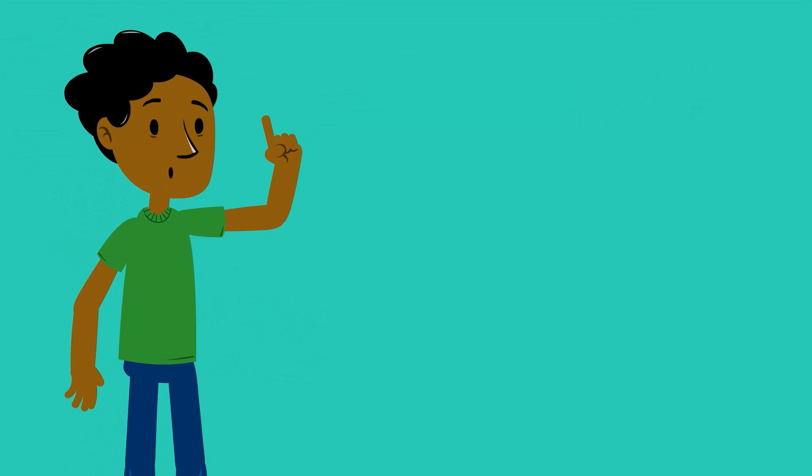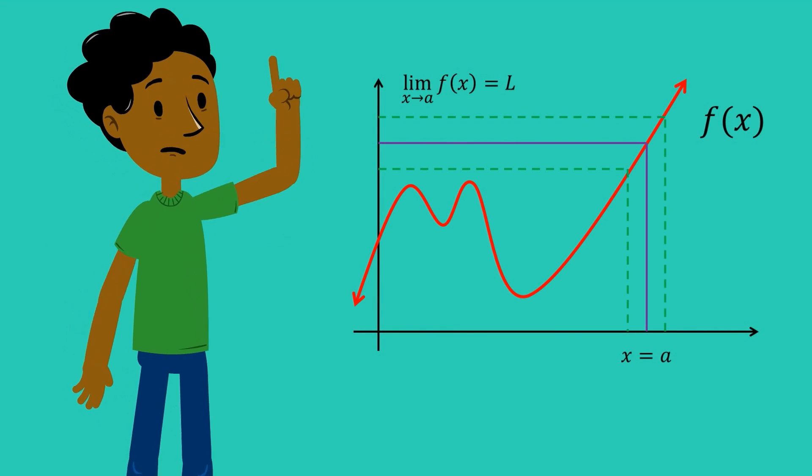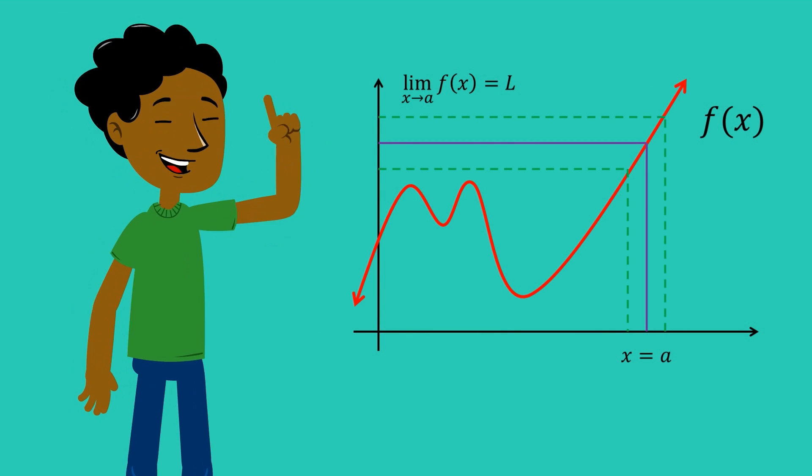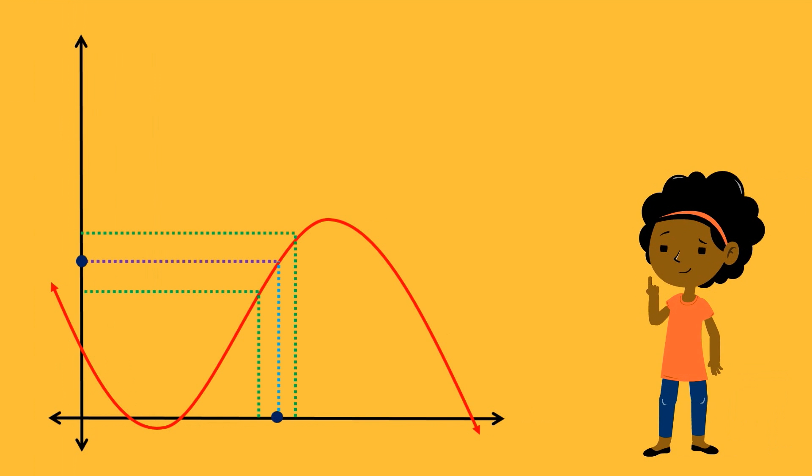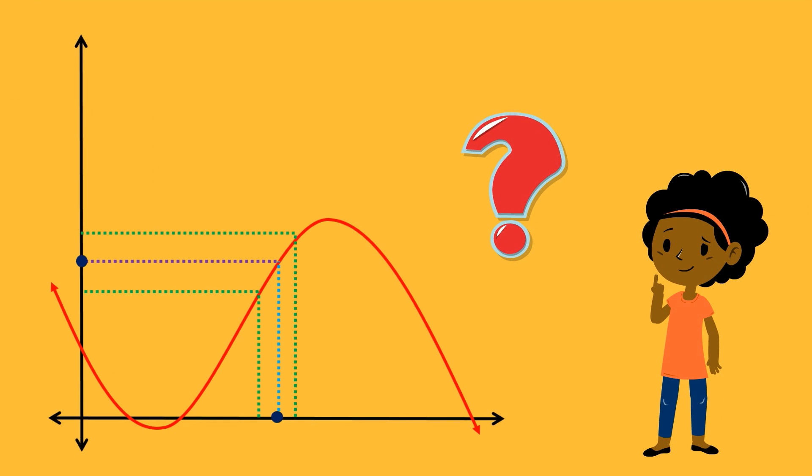Hopefully both of these examples really highlight how limits focus on the behavior of a function. What they get arbitrarily close to. One thing we still have left to cover is what it exactly means when we say that a function gets arbitrarily close to a value.